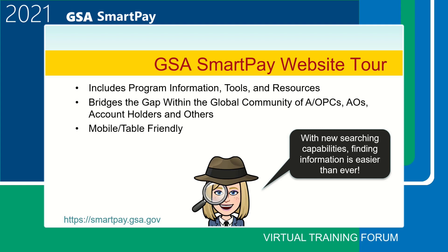Hopefully many of you have already visited the website, but if you haven't, the link is https://smartpay.gsa.gov. It will also be written on the bottom of each slide. To get to the GSA SmartPay online training, you can either click on the Visit Online Training link in the main menu bar at the top of the website or go directly to https://training.smartpay.gsa.gov.